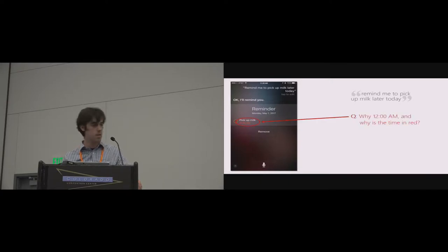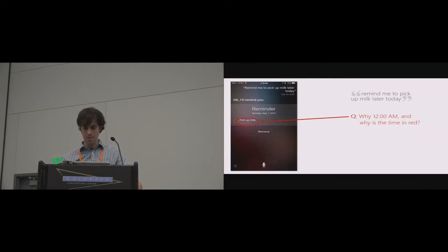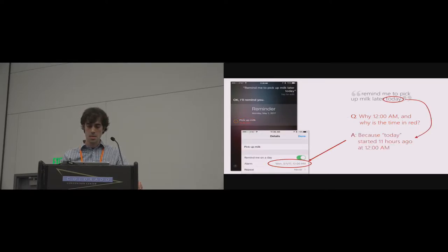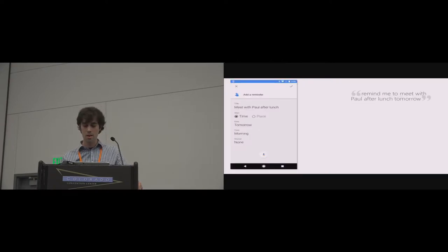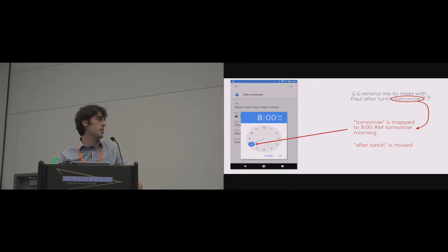I asked Siri to remind me to pick up milk later today, and a reminder gets created. But the reminder is set to go off at 12 a.m. and it's already showing up in red. That's because it recognized the word 'today' in my utterance, and today started 11 hours ago. So when will I get my reminder? Probably never, since it's set to go off in the past.